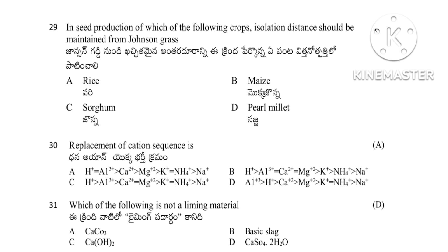Question 30: Replacement sequence of cations is: H+ > Al3+ > Ca2+ > Mg2+ > K+ = NH4+ > Na+. Sodium is replaced first, followed by ammonium, potassium, magnesium, calcium, aluminium, and hydrogen. Question 31: Which of the following is not a liming material — CaCO3, basic slag, Ca(OH)2, or CaSO4·2H2O. The answer is CaSO4·2H2O, which is gypsum, not a liming material.